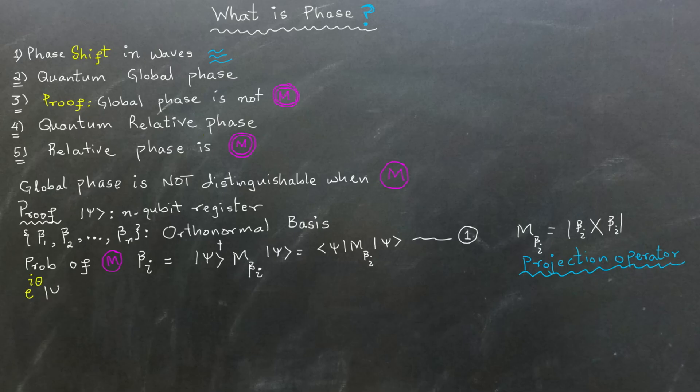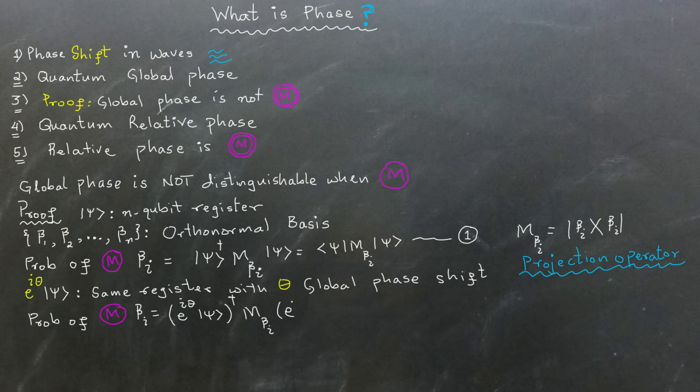Now, let's attach our global phase to ket psi by multiplying it with Euler's number raised to the power i theta. We use the same method of projection operator to measure it for the same basis. Our probability of measuring beta i in this case will be the conjugate transpose of Euler's number raised to the power i theta ket psi, times M beta i times Euler's number raised to the power i theta ket psi.